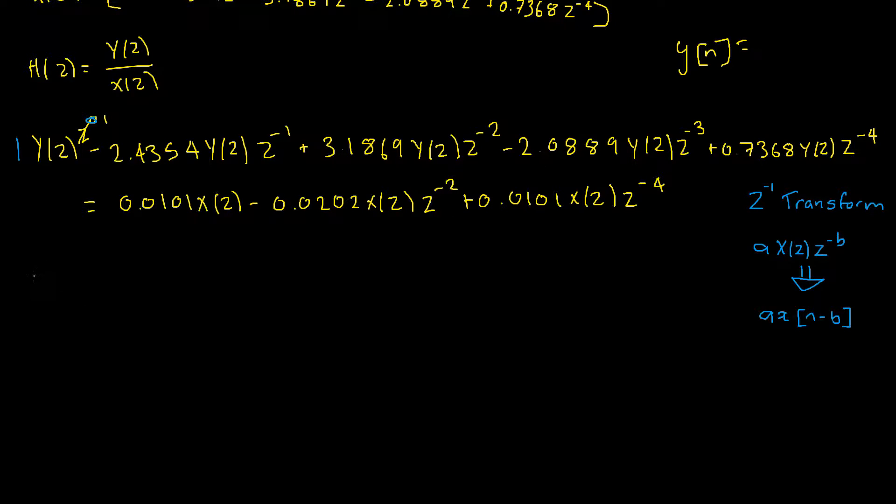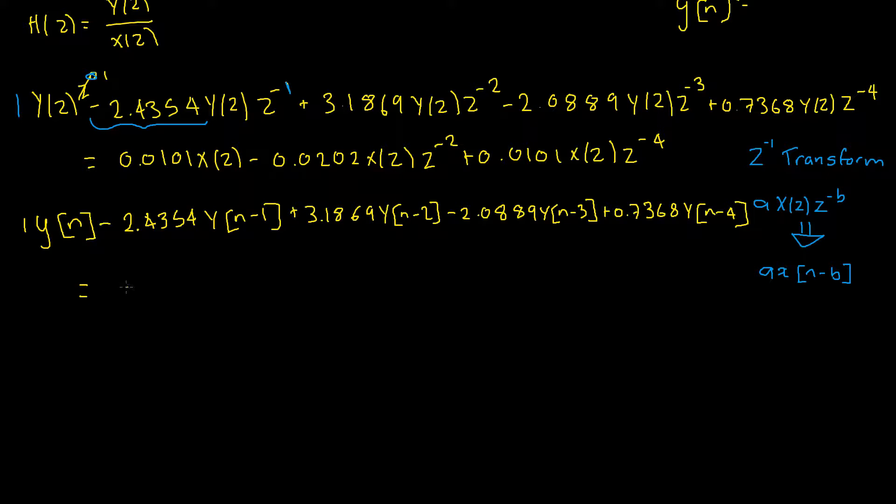And then our A coefficient for our second term is negative 2.4354 our B in this case here is simply 1. That will give us negative 2.4354 Y of N minus 1 and then we'll repeat that process for all of our terms here. We'll just skip ahead for that. And then as before that is still all equal to.